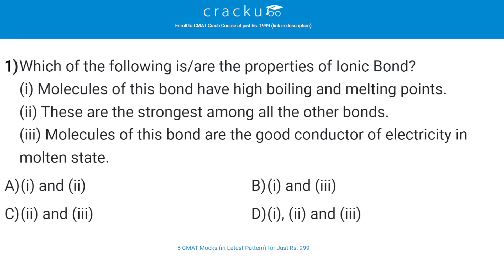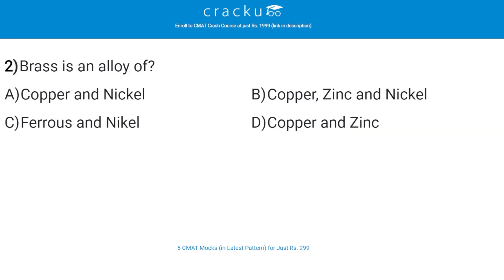Let's start with the first question: which of the following are the properties of ionic bond? The correct answer is D — first, second, and third. Molecules of this bond have high boiling and melting points. These are the strongest among all other bonds, and molecules of this bond are good conductors of electricity in molten state.